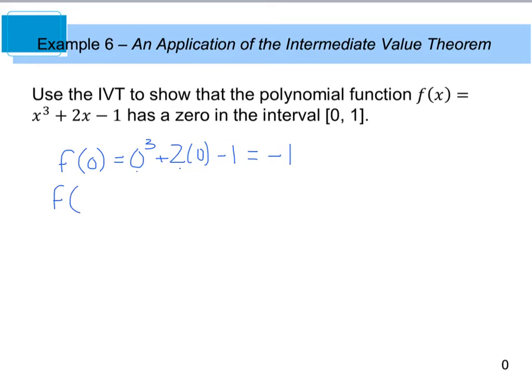Then I'm going to look at f(1), and this 0 and 1 is coming from my interval range there. So now I have 1³ + 2(1) - 1. Well, 1³ is 1, plus 2 is 3, minus 1 is 2. So now, because both of these exist, I know that I have a continuous function.